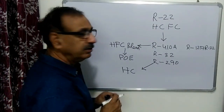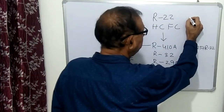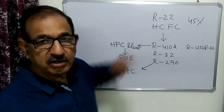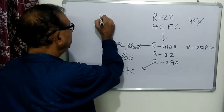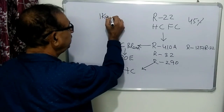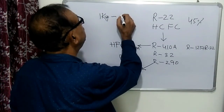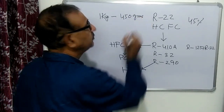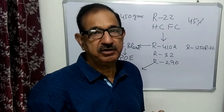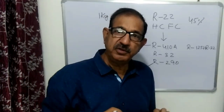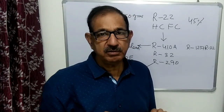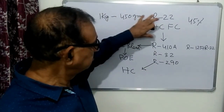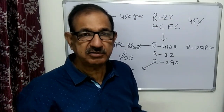The charge quantity restriction for R290 is a maximum of 450 grams in a domestic air conditioner. If we are replacing R22 with R290, we have to charge only 45% of the R22 charge quantity. So if we had charged 1 kg of R22, we need to charge only 450 grams of R290.